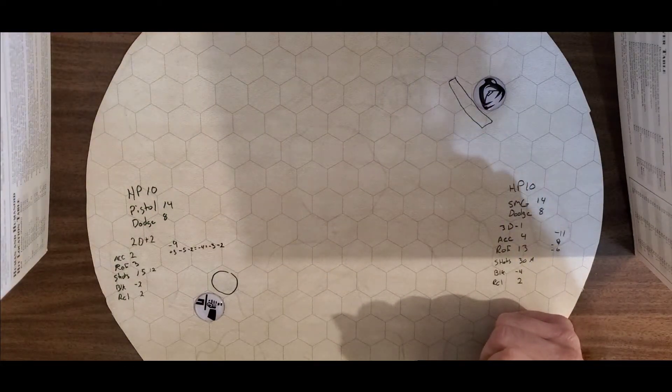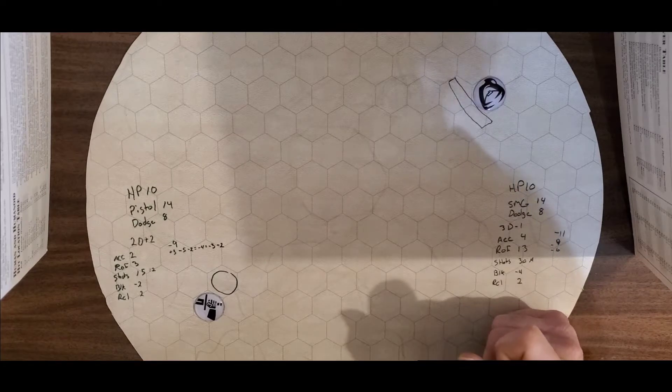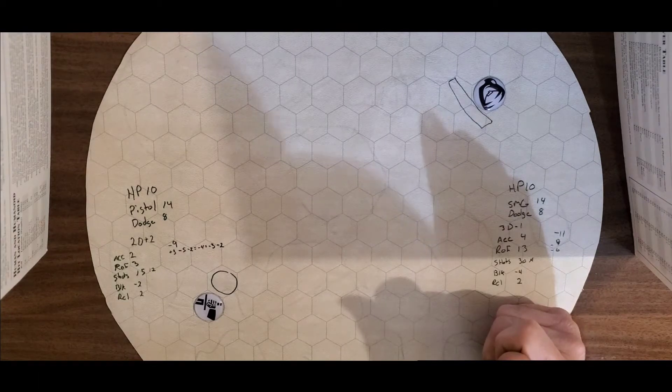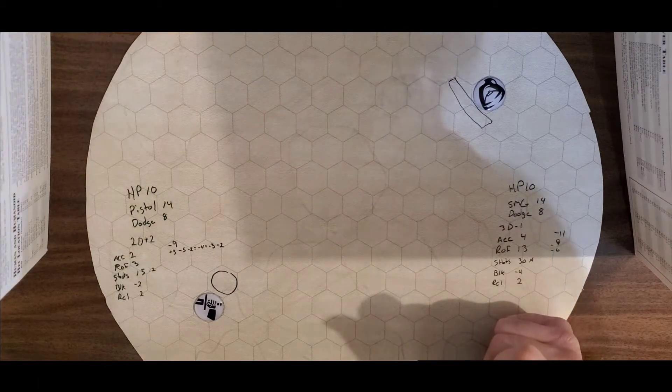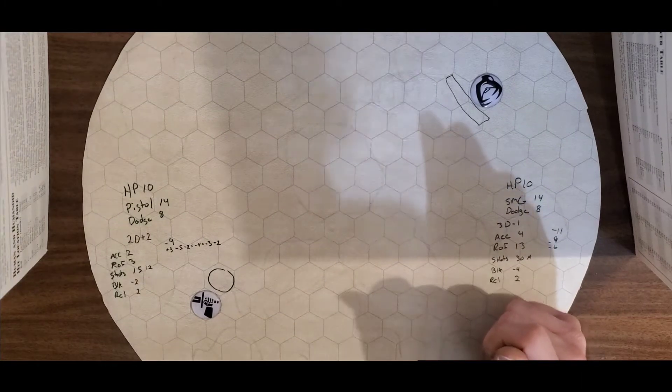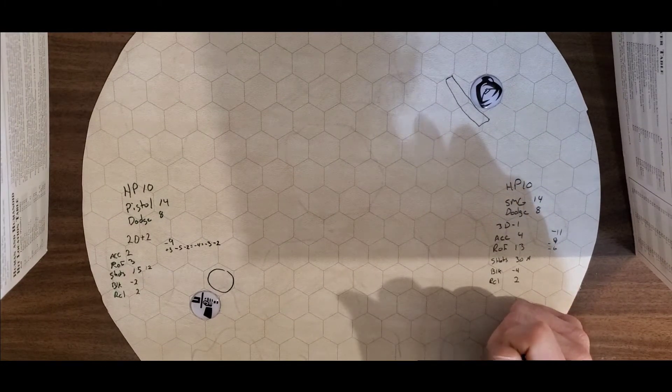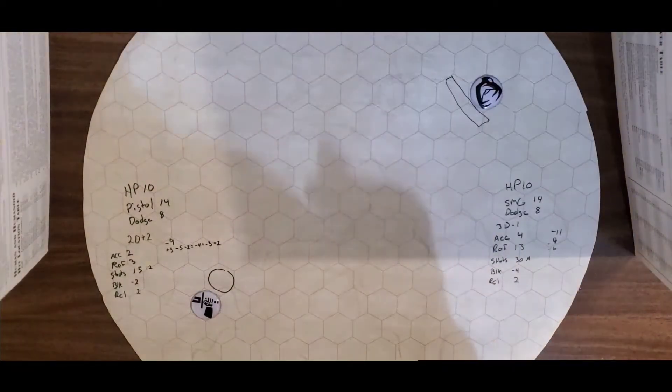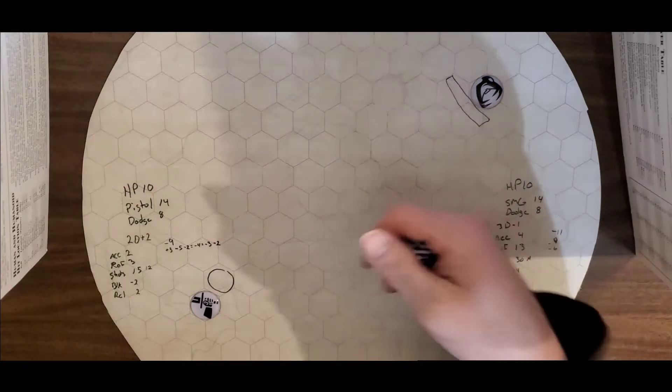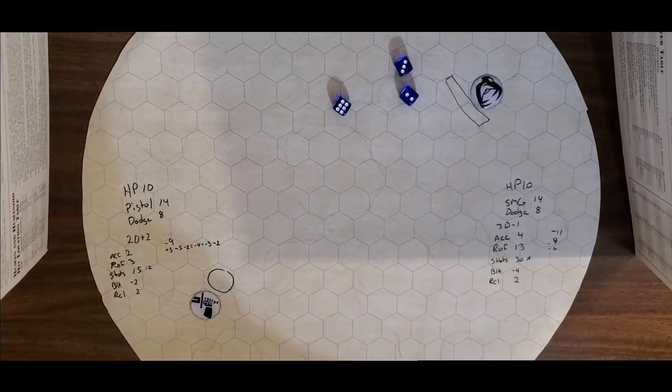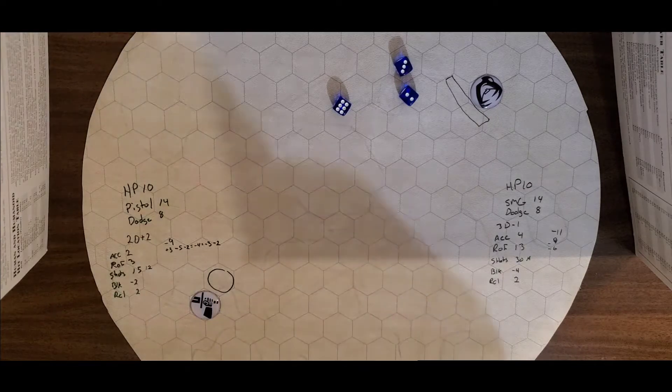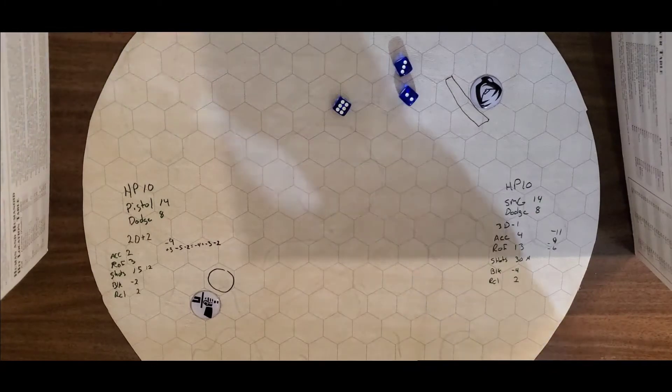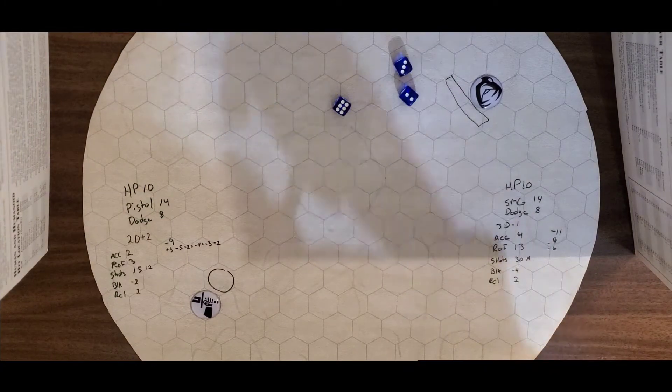When you drop you get an additional plus three. There's a plus two. Dodge and drop. So he now has an 11 to dodge. He drops back down by cover. I need an 11. Oh yeah, he gets it. He drops back down. This shot goes wide.